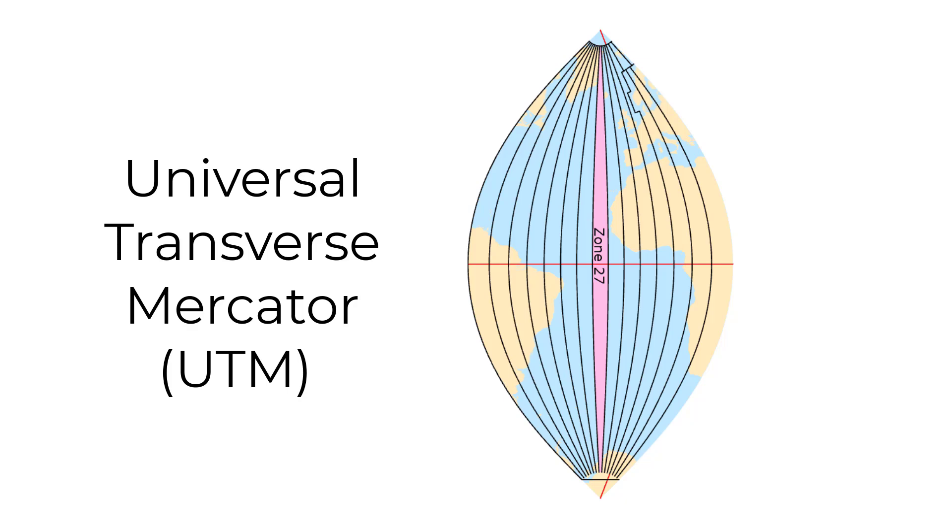The Universal Transverse Mercator projection, or just UTM, is one of the most widely used map projections. But what is it and how does it work?